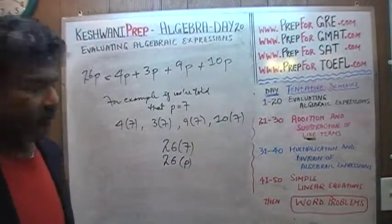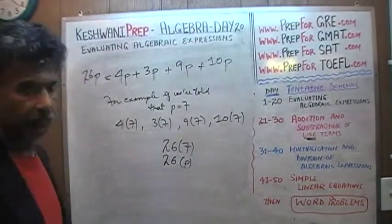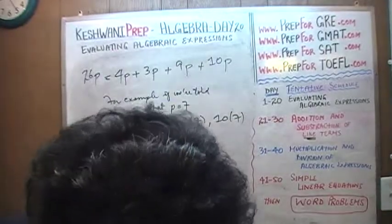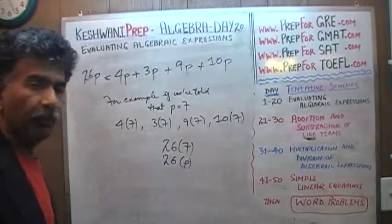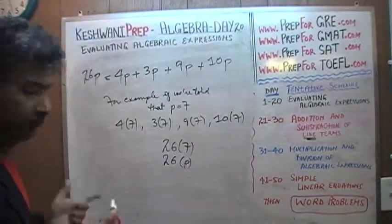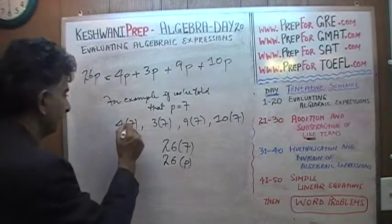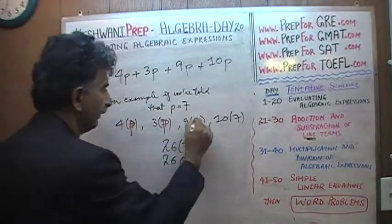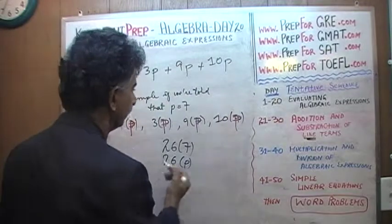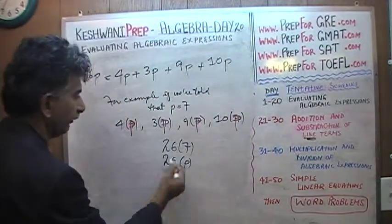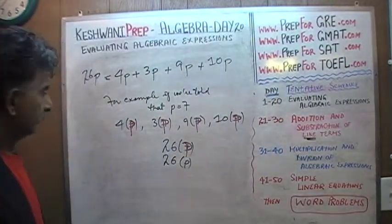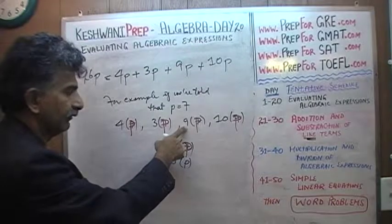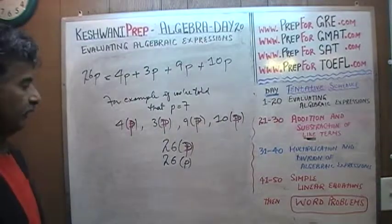We do not know how much p is — I just made up the value. In reality p is some variable. We have 4 p's, 3 p's, 9 p's, and 10 p's. So how many p's do we have? 4 plus 3 is 7, 7 plus 9 is 16, 16 plus 10 is 26. So we have 26p.